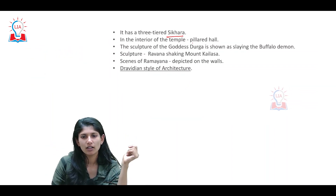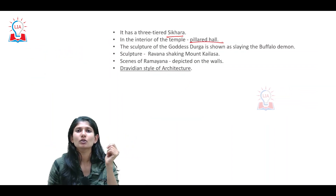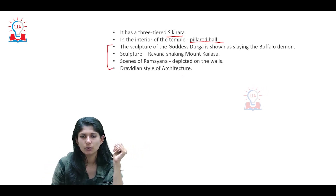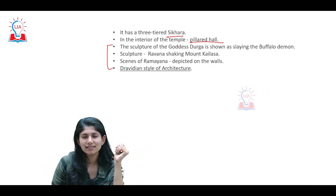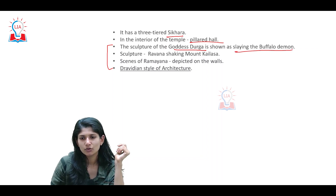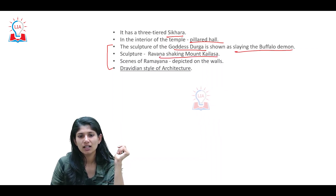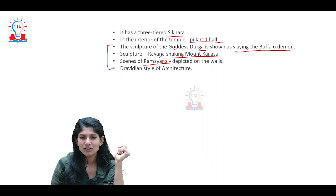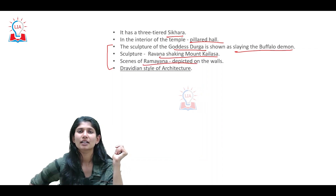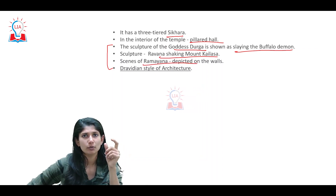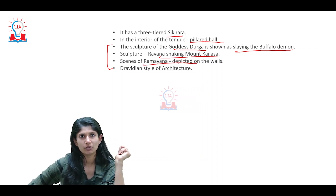There is a pillared hall. One particularly important portion — very important from a prelims perspective — is the sculpture of Goddess Durga slaying the buffalo demon, Ravana shaking Mount Kailasha, and scenes from the Ramayana depicted here.